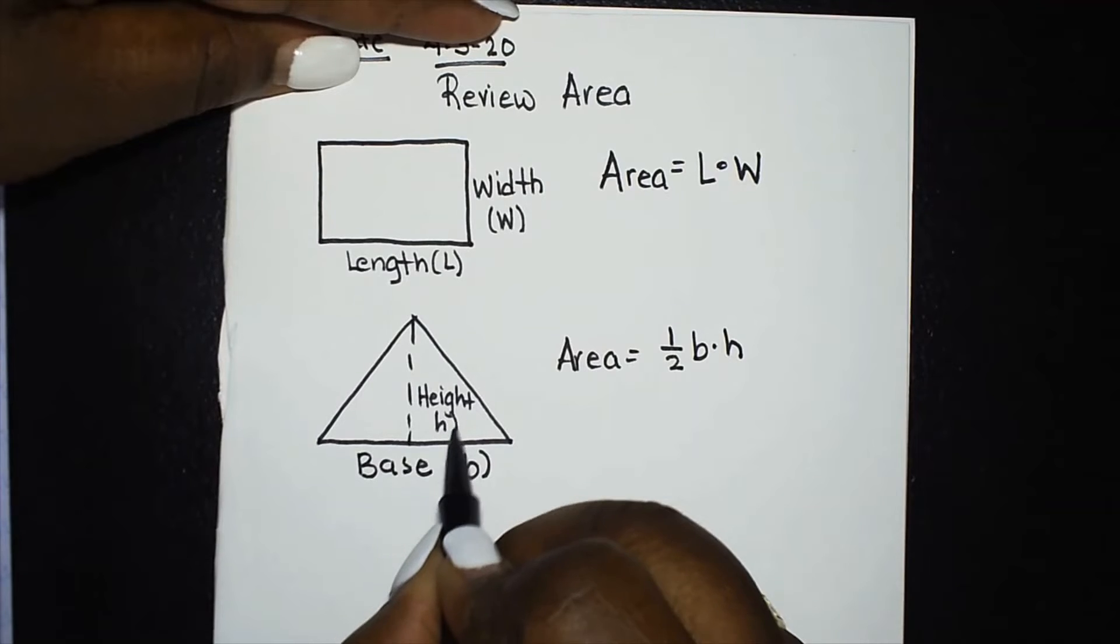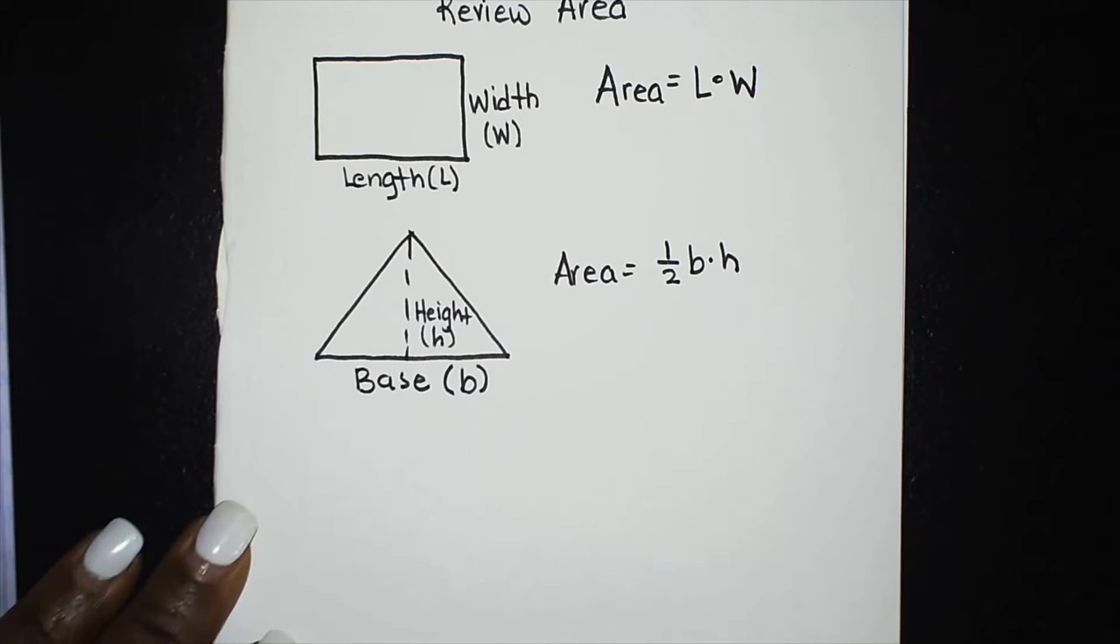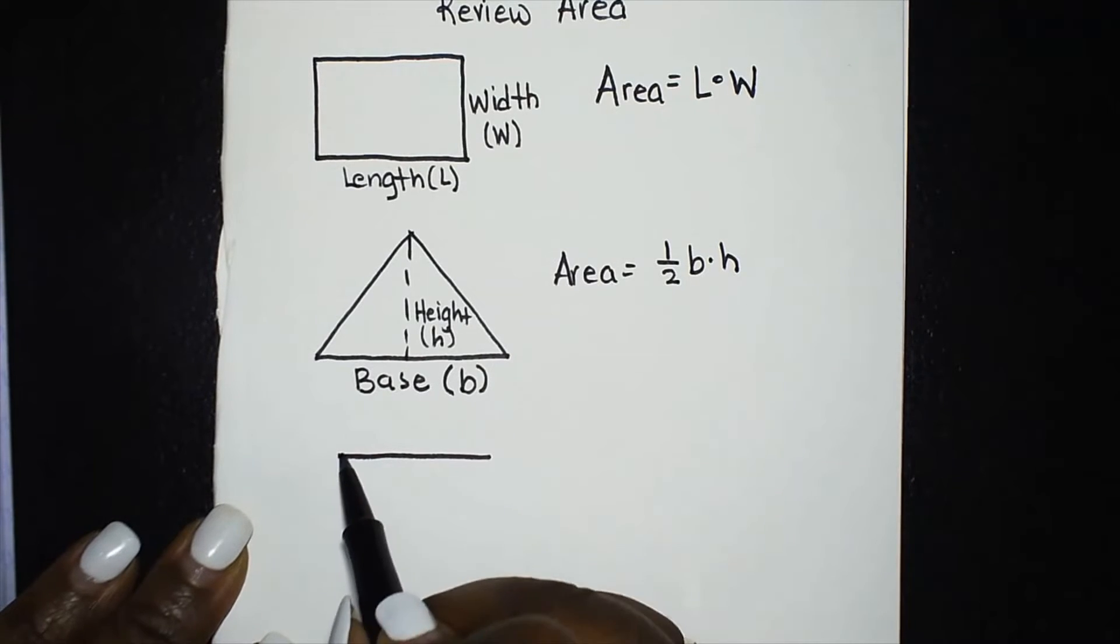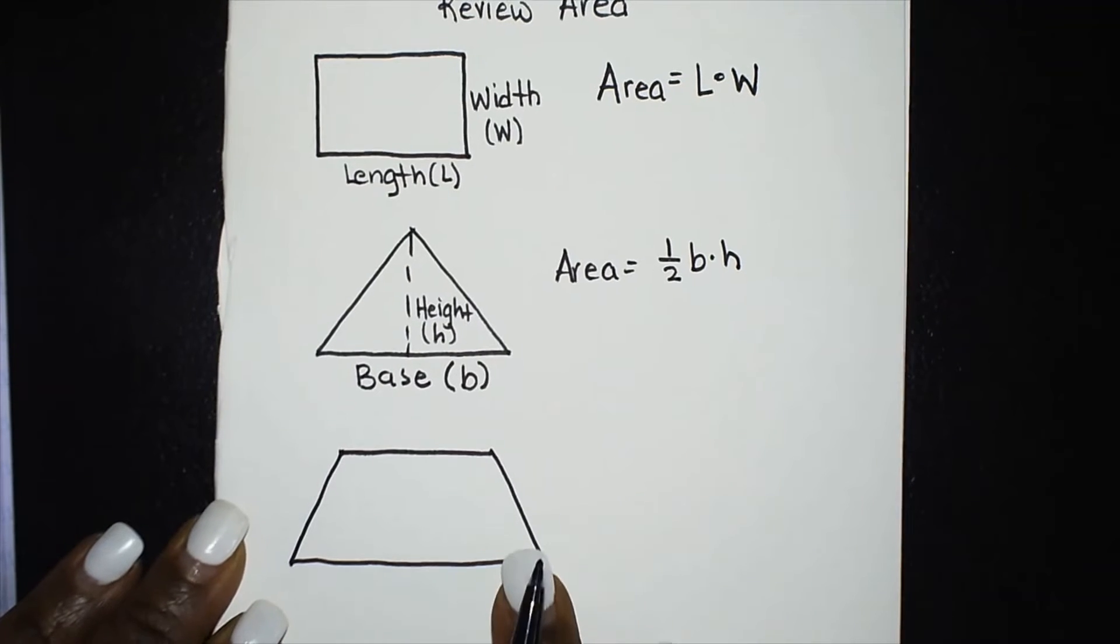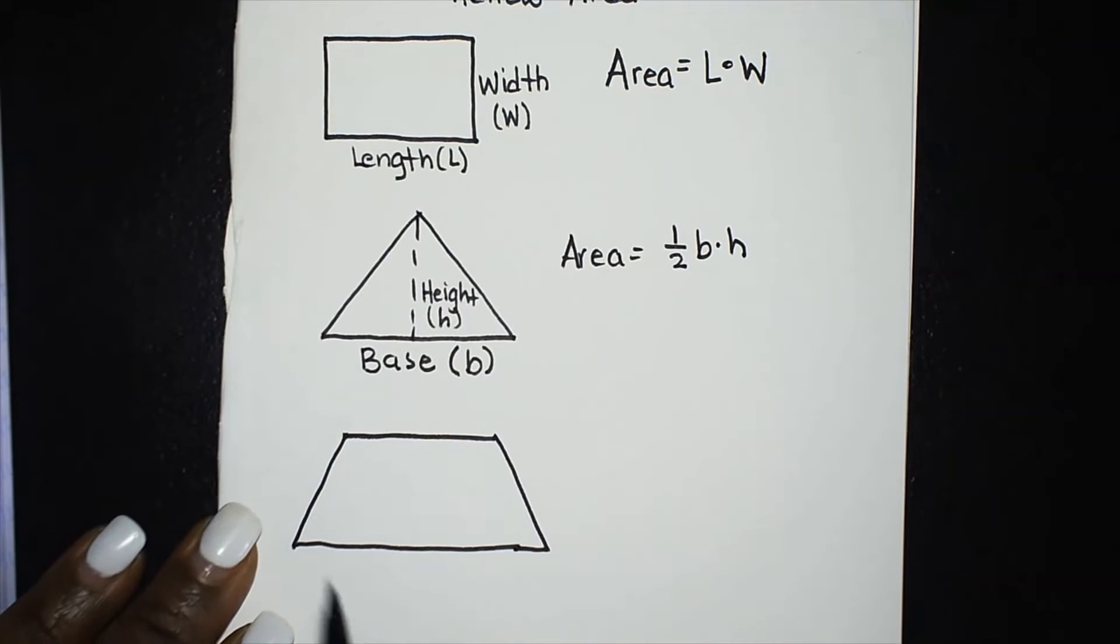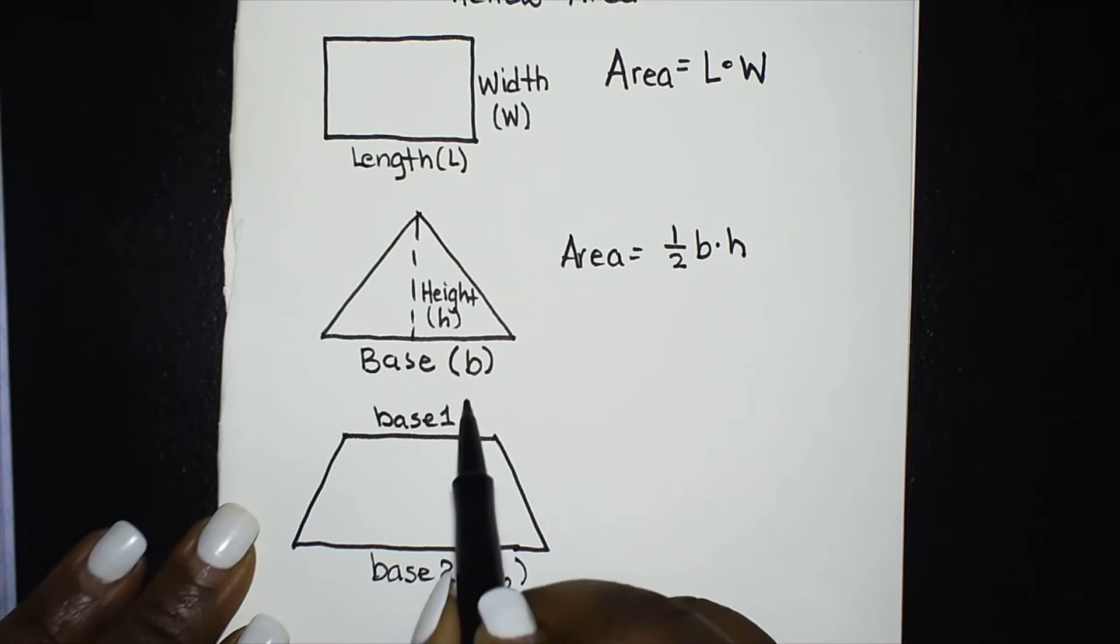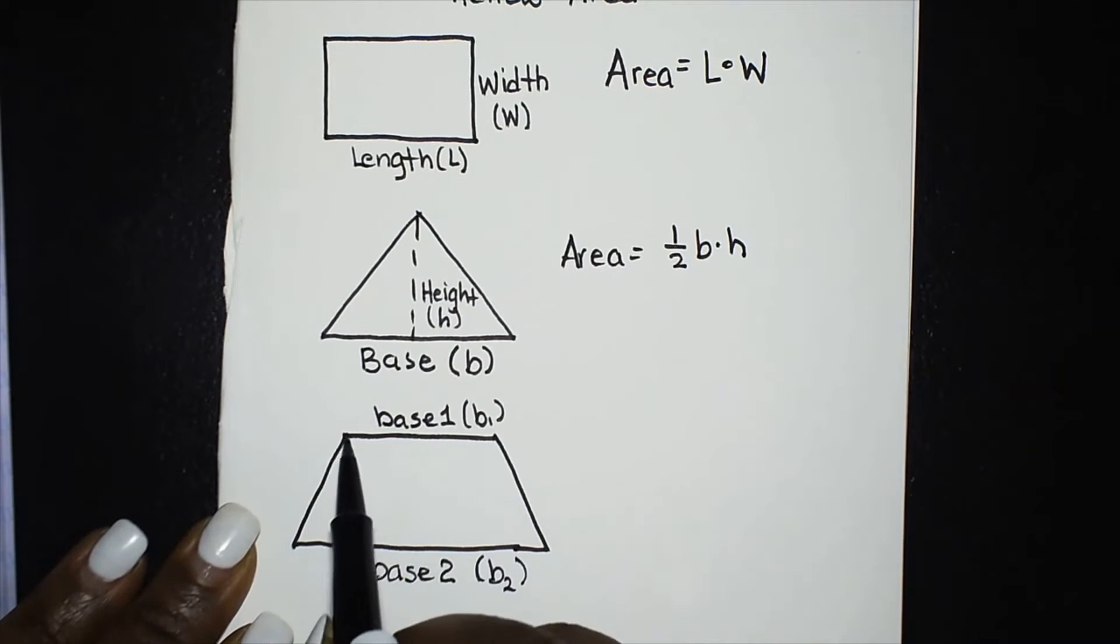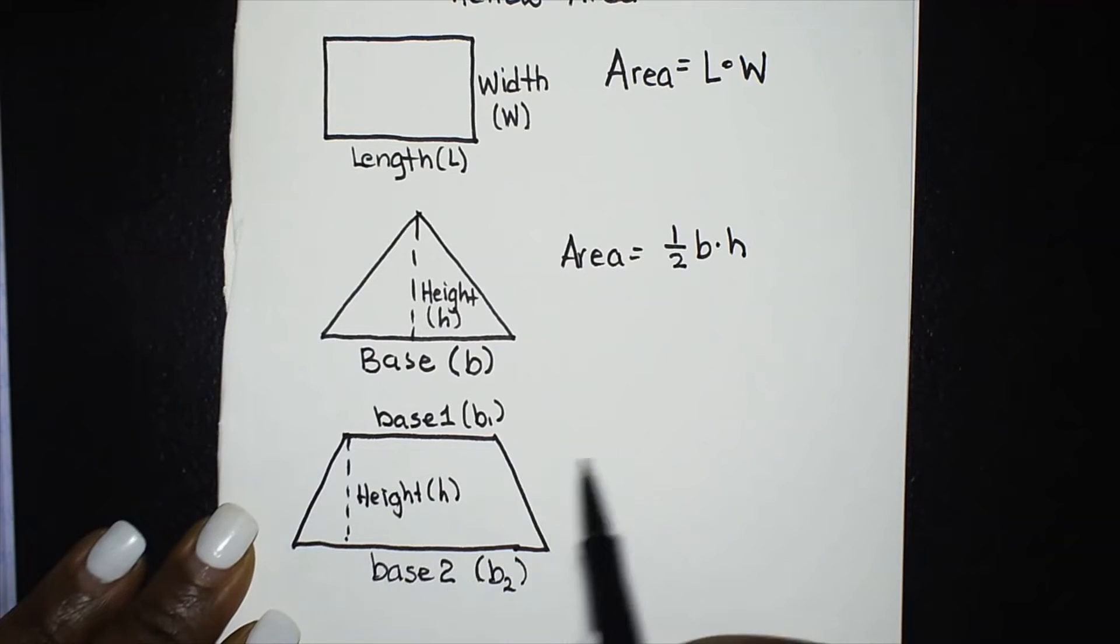The next shape we have is a trapezoid. The trapezoid has two bases that are parallel to each other. I'm going to call this base two so that's going to be B2 and this is going to be base one we're going to call that B1. Here we have the height of the trapezoid and we'll use H for that.